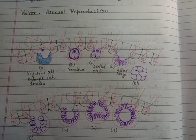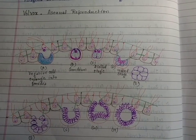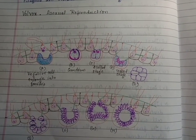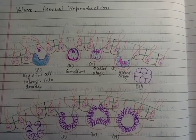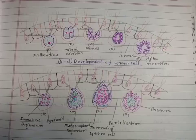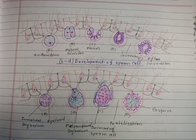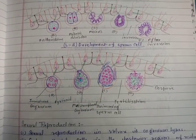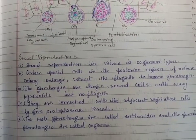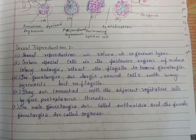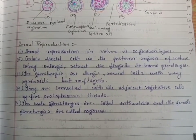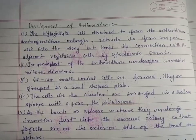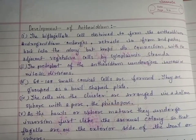There are four diagrams of asexual reproduction of Volvox. For sexual reproduction, the fourth topic is the development of antheridium.